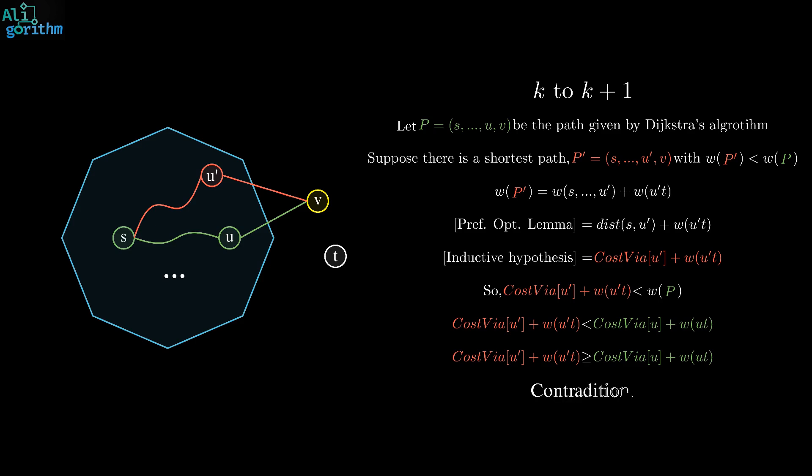Therefore, P, the path given by Dijkstra's algorithm, is a shortest SV path. The algorithm works correctly for k plus 1, and by induction, for each k from 0 to the number of vertices, the algorithm works correctly. Yuppie!